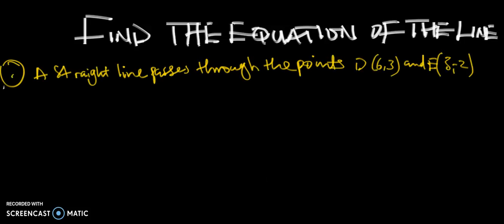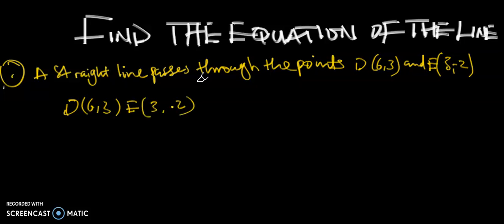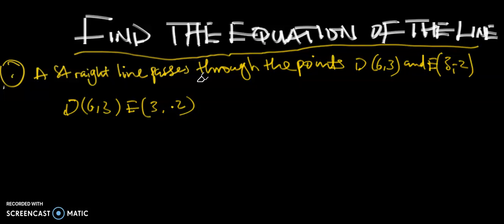Our question: a straight line passes through point D and point E. Point D is given by (6, 3) and point E is given by (3, -2). We have to find the equation of the line.